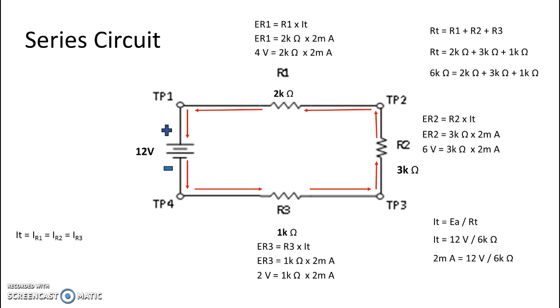If I were to have my black lead at test point 4 and my red lead at test point 2, I would read 8 volts on my digital display because my red lead would have 8 volts and my black lead would be 0 volts.